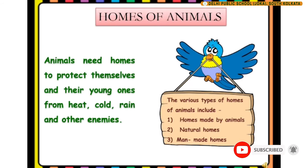Now let us know about the homes of animals. Animals need homes to protect themselves and their young ones from heat, cold, rain, and other enemies. The various types of homes of animals include: number one, homes made by animals; number two, natural homes; number three, man-made homes.